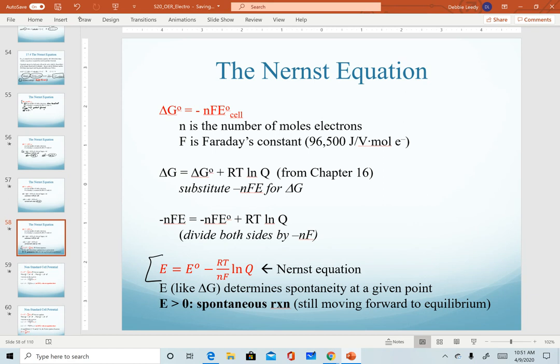The key thing to note here is that our non-standard cell potential, like delta G, is what determines spontaneity at a given point in a reaction. So as long as we have a positive non-standard cell potential, it means that our reaction is still moving forward. It is still spontaneous.